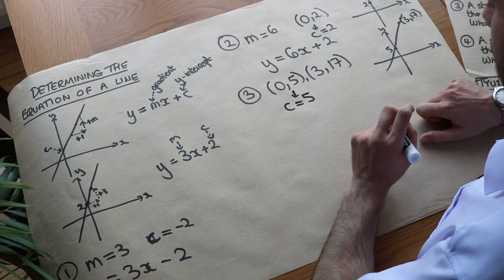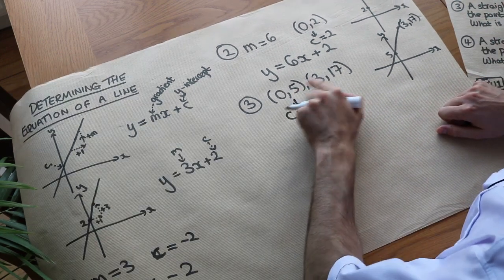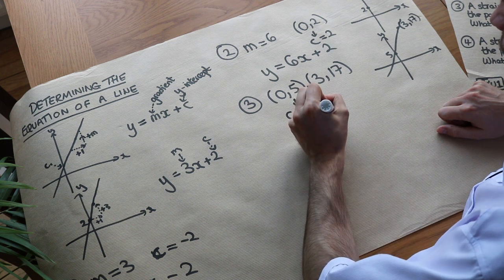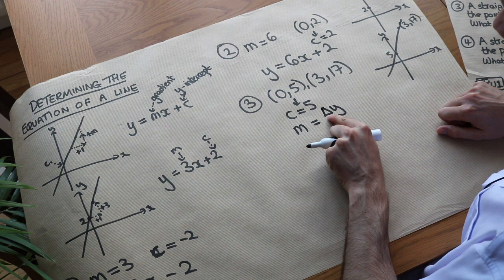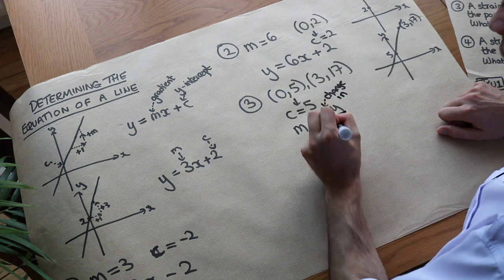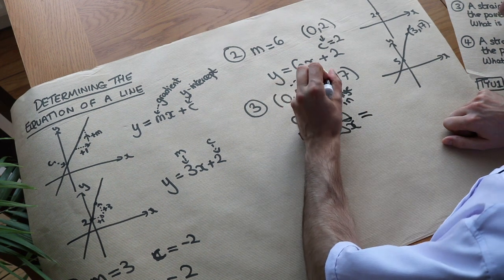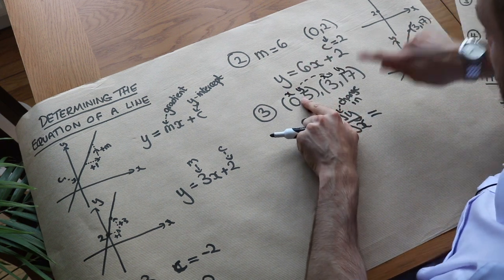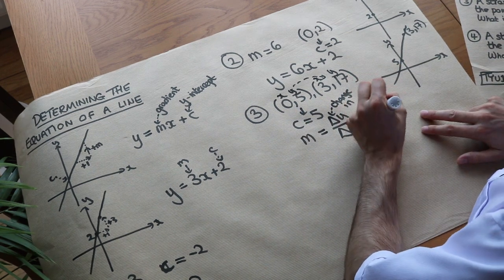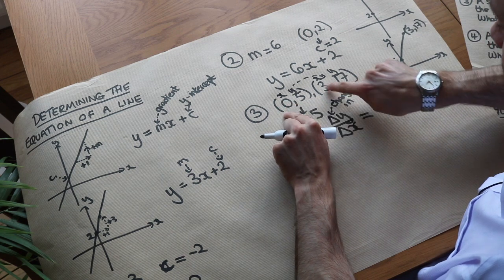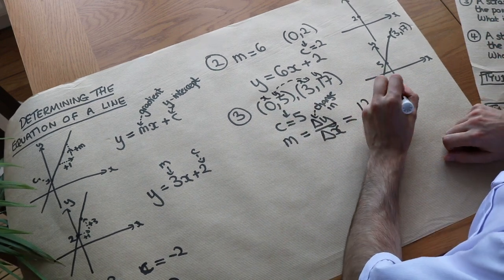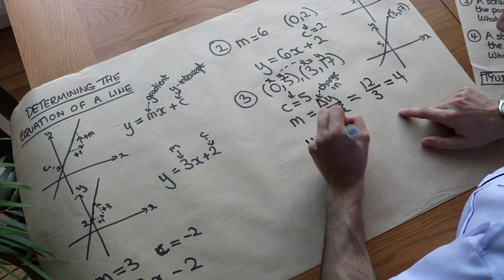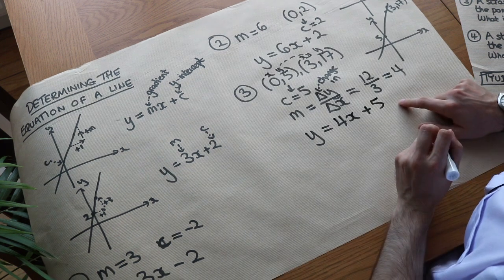This time we don't know m directly. But from a previous video, given two points we can work out the gradient: m equals the change in y over the change in x. Going from point 0, 5 to point 3, 17 — the change in y from 5 to 17 is 12, and the change in x from 0 to 3 is 3. So m equals 12 divided by 3, which is 4. Now we've got m equals 4 and c equals 5, so the equation is y equals 4x plus 5.